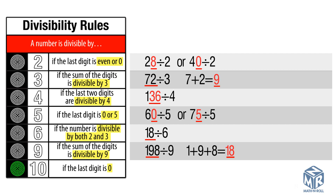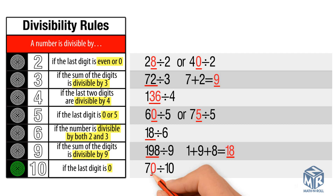A number is divisible by 10 if the last digit is 0. 70 divided by 10: the last digit is 0, so 70 is divisible by 10.